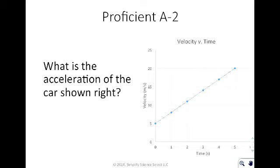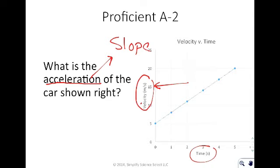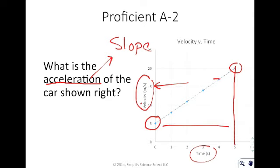To find the acceleration of the car shown, always check the axes first. We have velocity and time, so since this is a velocity versus time graph, the acceleration is the slope. You always need to check the axes before assuming you need to find the slope. I'm going to pick the two easiest points to read — the ones that fall exactly on grid lines so I don't have to estimate.